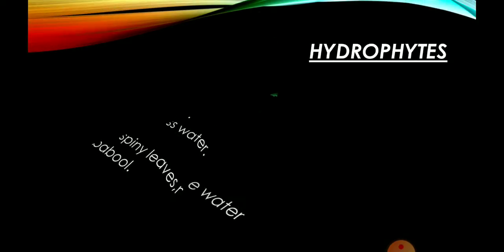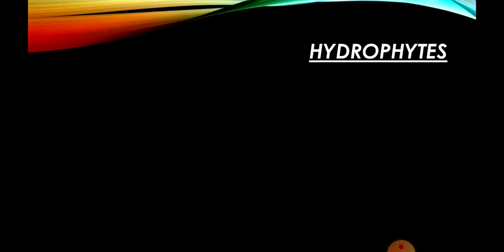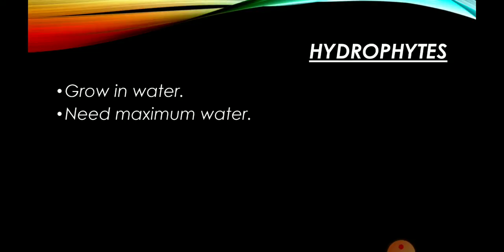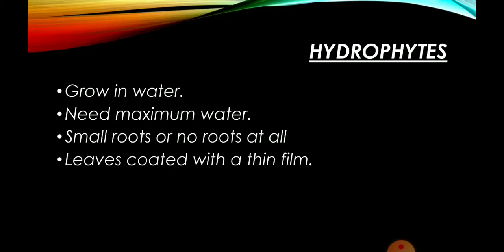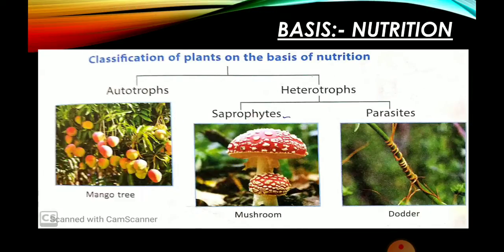Examples of xerophytes: cactus and baobab. Then hydrophytes — hydrophytes are growing in water, they need maximum water. Hydrophytes की roots बहुत small होती हैं। इनकी leaves पर एक thin waxy film होती है — waterproof material होता है, thick होता है जिसके ऊपर पानी का असर नहीं होता है। इसका example है lotus and water lily.